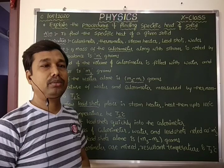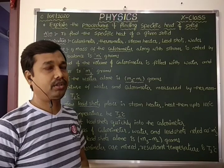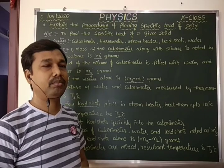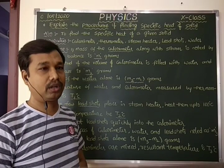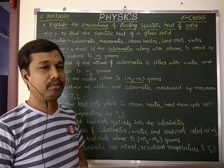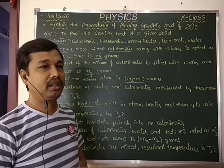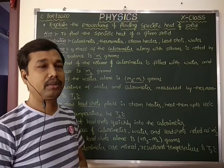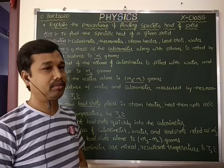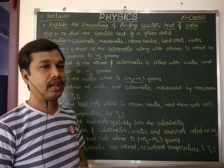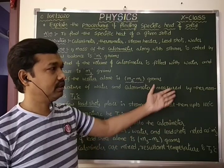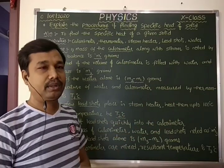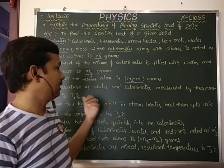After that, we need to measure the temperature of the calorimeter and water using a thermometer. This temperature is represented as T1 degrees Celsius.